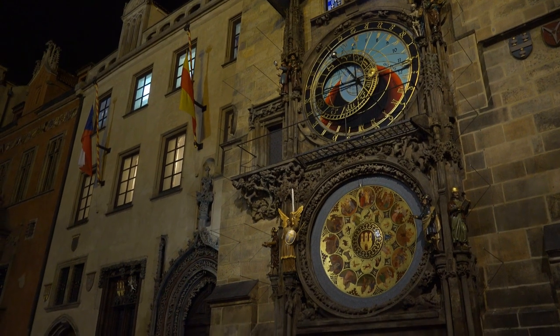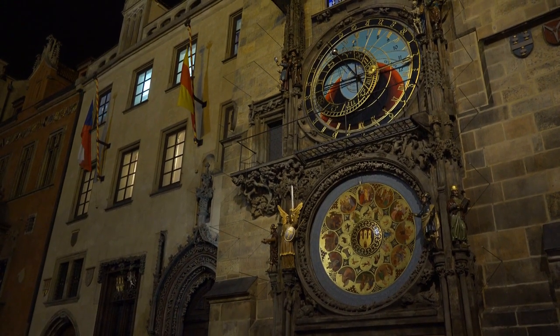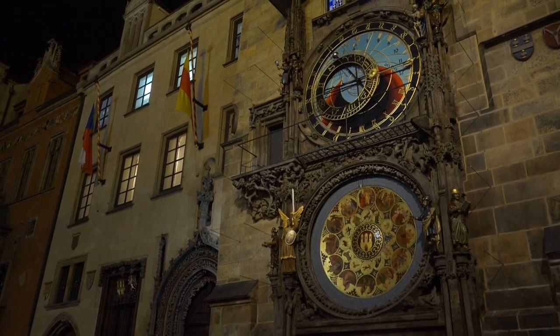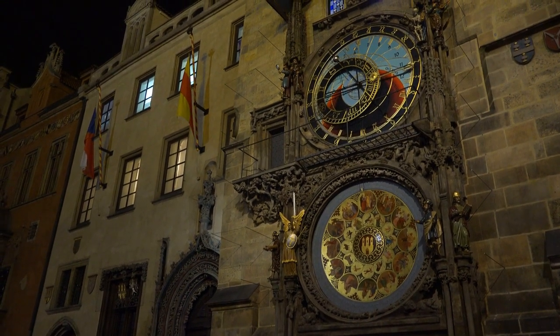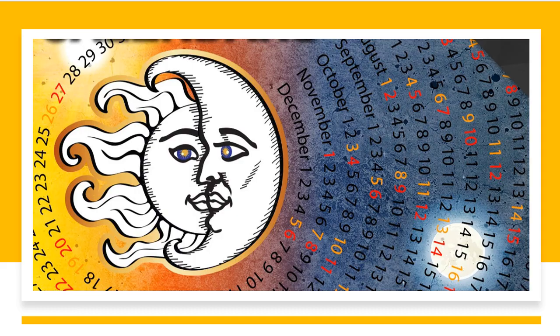Lastly, the lunisolar calendar. As the name sounds, it uses both the moon's phases and the time for a solar year to track time. Throughout the history of time, each country and religion has used either a lunar, solar, or lunisolar calendar.